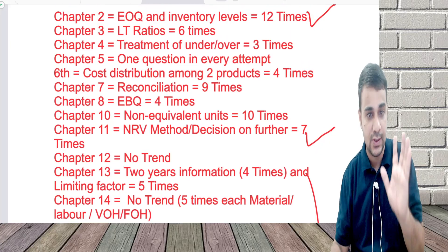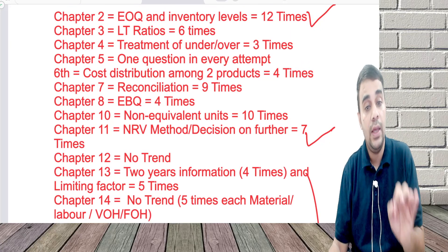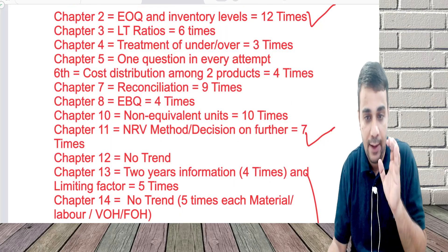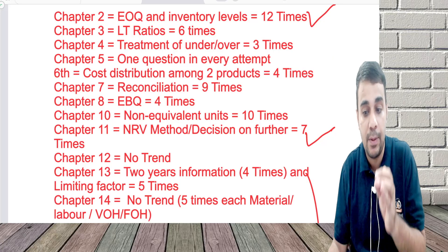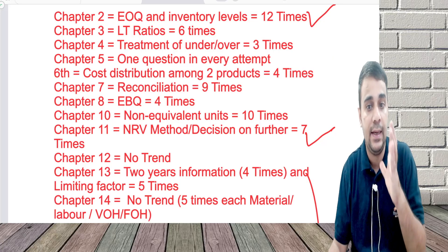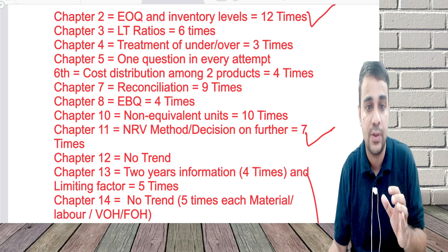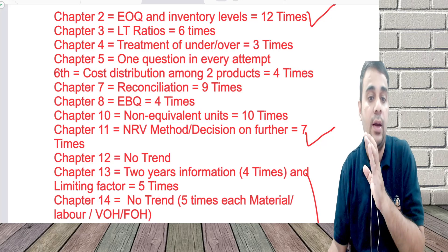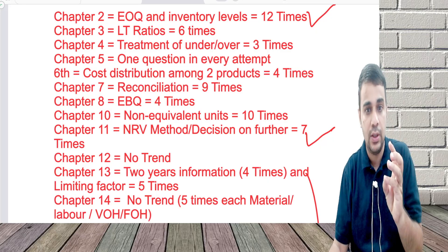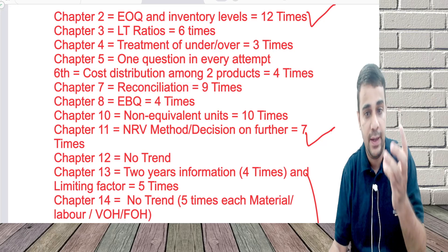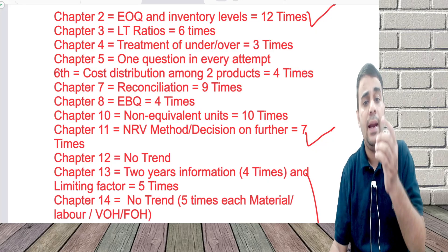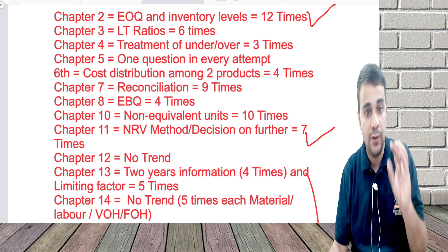In Chapter 2, the trend analysis shows that Economic Order Quantity and inventory levels — that is reorder level, maximum level, and minimum level — have been tested 12 times, with around 17 to 18 questions from this chapter. If you're not able to do other areas, at least complete EOQ calculations: basic EOQ questions, questions with quantity discount, and inventory levels.